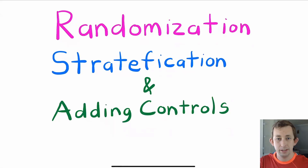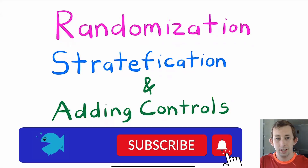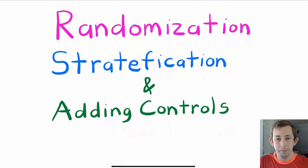Hi guys, welcome back to InCase of Econ Struggles, going to another causal inference struggle. Today I want to talk about stratified randomization, specifically why you might see stratified randomization in papers and why it makes sense to do stratified randomization. It's something that you may or may not do on your own, but it's definitely something that you might see in other papers, so I want to talk about it.